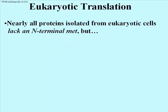Now a few notes on eukaryotic translation. All of what I've been telling you about translation is based largely on studies with E. coli, with prokaryotes, with bacteria. So how does eukaryotic translation differ from that of bacteria? Well, first of all, nearly all proteins that you isolate from a eukaryotic cell don't have methionine at the beginning. Remember that in E. coli, 40% of the protein had a methionine at the front end, at the amino terminus, but eukaryotic proteins generally don't.